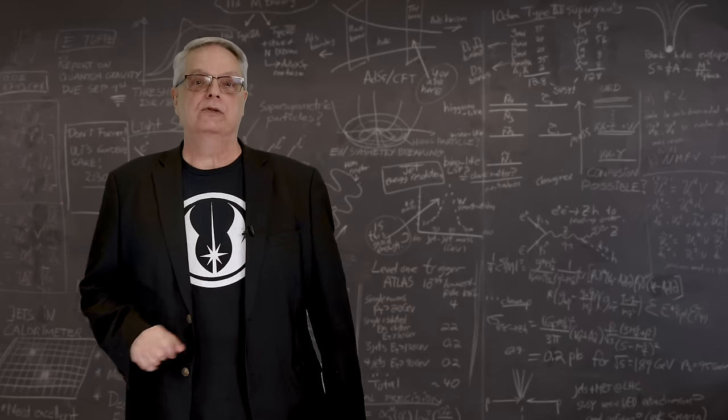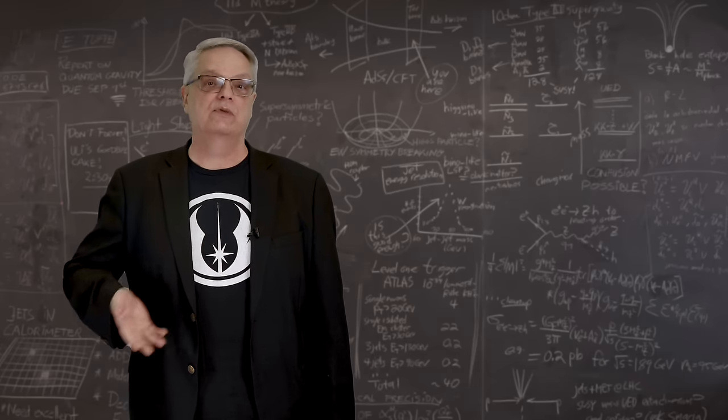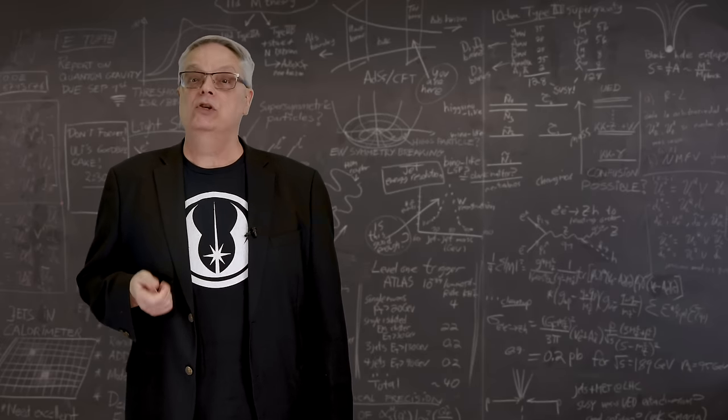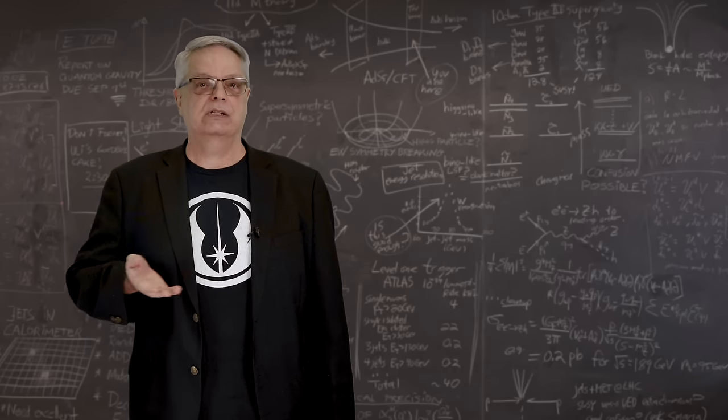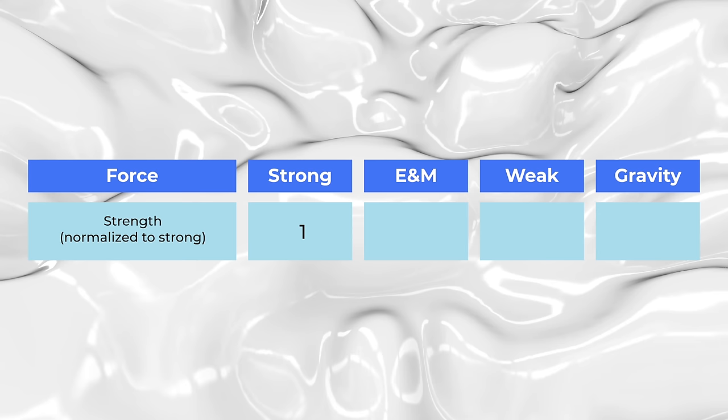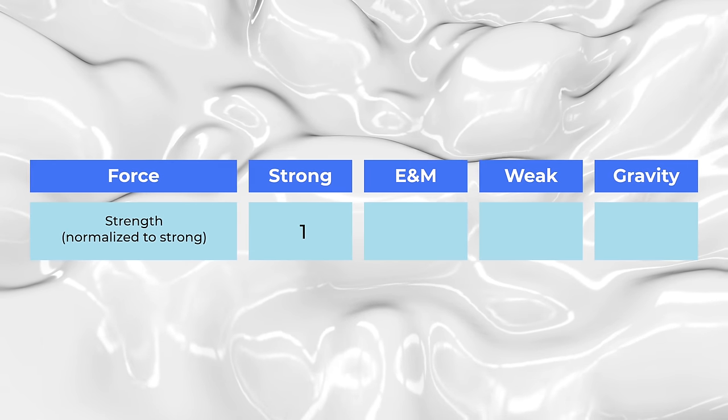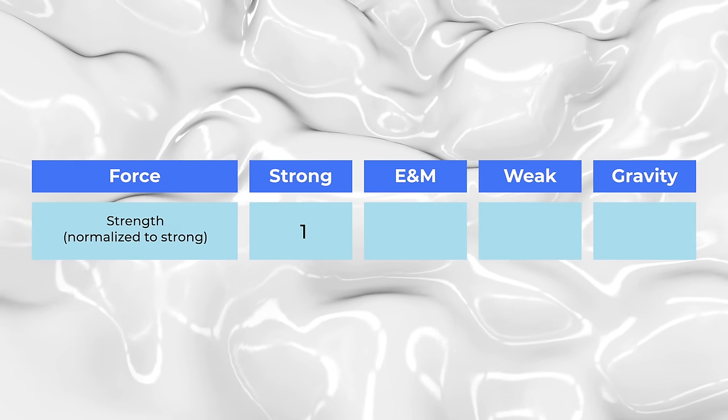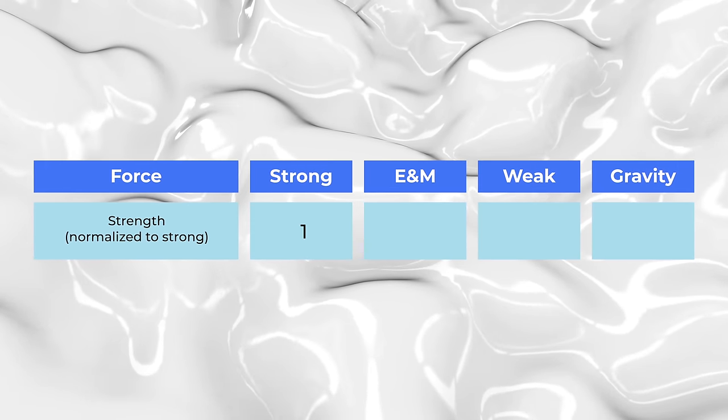When authors and video creators list the forces, they order them in terms of how strong they are. The usual list says that the strongest of the forces is the strong force. If you call the strength of the strong force to be the basic unit, we can say that it has a strength of 1.